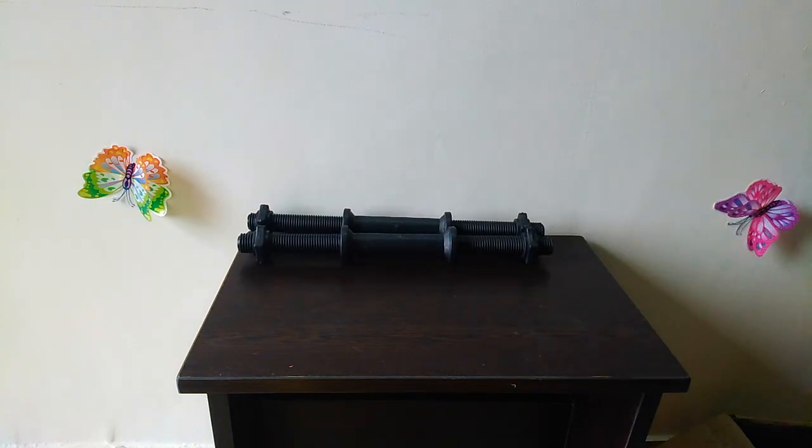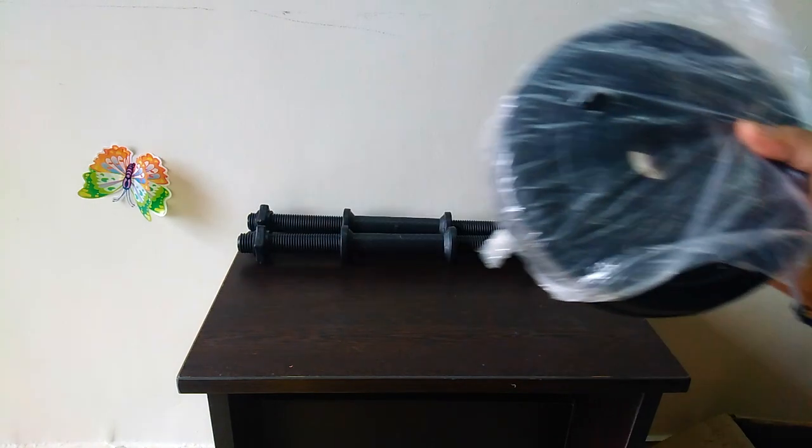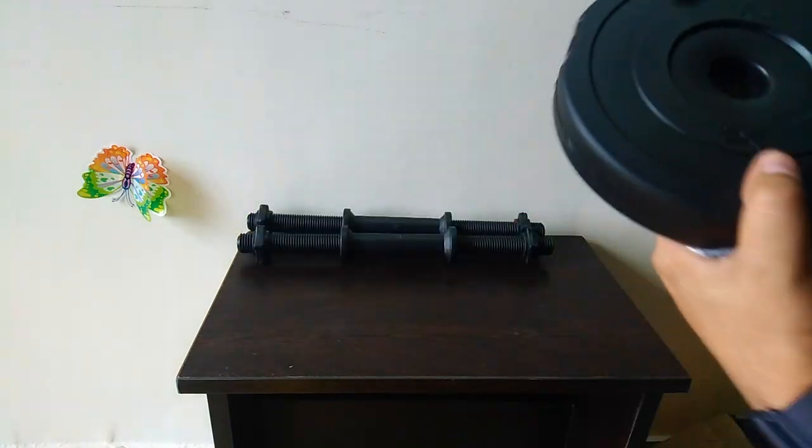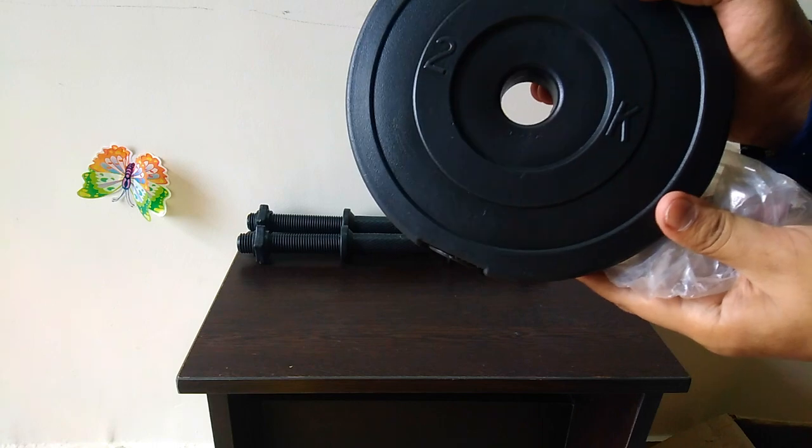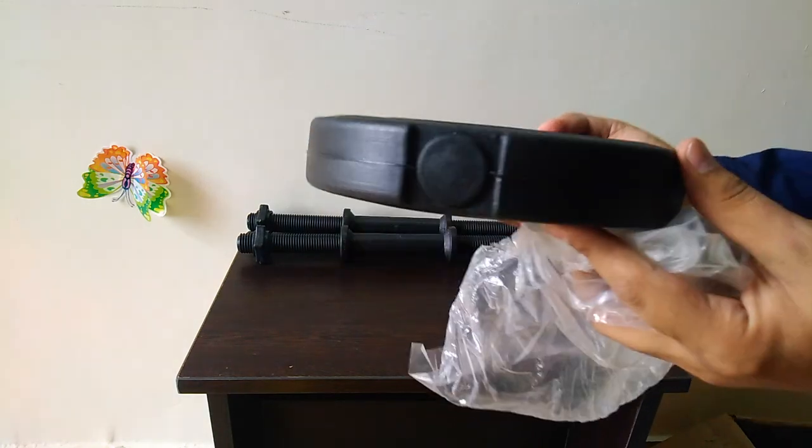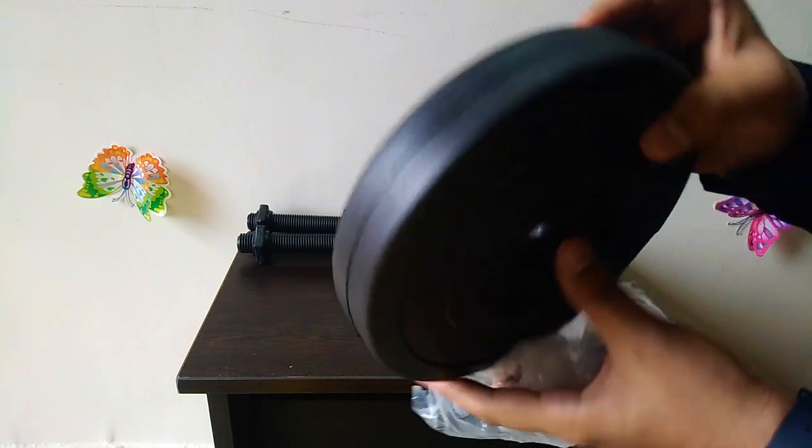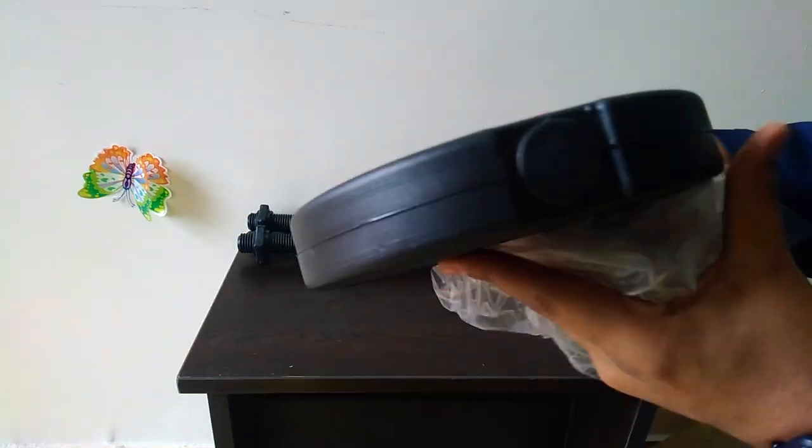Time to open up a dumbbell plate now. I will open it for you. This is the 2kg PVC dumbbell plate. Here you can see the quality as well.